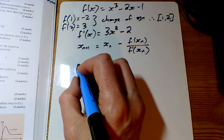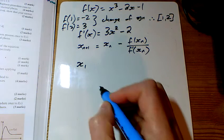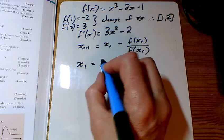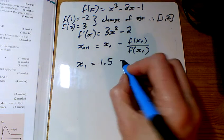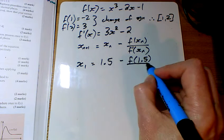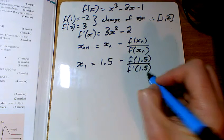So if I want to find out what x1 is, they're telling us to start with x0 of 1.5, so I'm going to take away f of 1.5 over f dashed of 1.5.